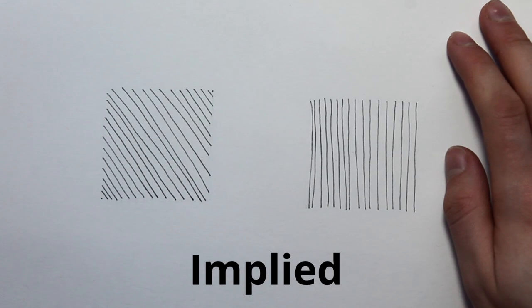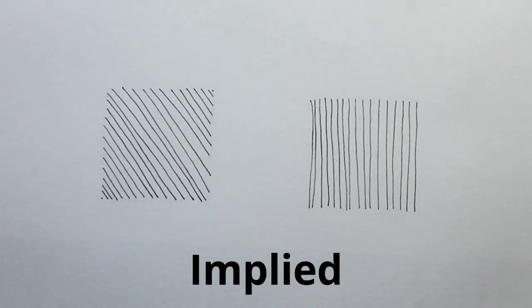So that concludes our episode on shape. Remember, we had our organic and our geometric shapes. We then had positive and negative. And finally we had our implied shapes. If you've got any questions, please leave them in the comments below. I hope you'll join us for our video next week, which is going to be on form.